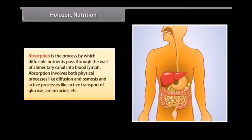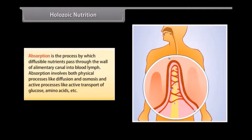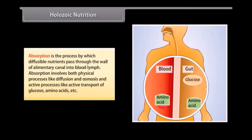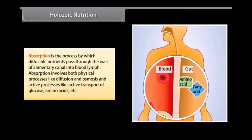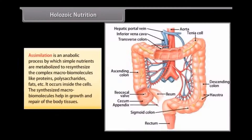Absorption is the process by which diffusible nutrients pass through the wall of the alimentary canal into blood and lymph. Absorption involves both physical processes like diffusion and osmosis, and active processes like active transport of glucose, amino acids, etc.